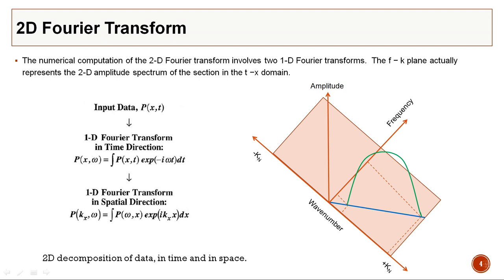A 1D Fourier transform of a seismic trace is one-dimensional in the time direction. If we want to do the 2D Fourier transform, it involves two 1D Fourier transforms: one in time and the other in space. In this diagram, if we consider just 1D Fourier transform we get amplitude vs. frequency. If we decompose this into dips, each linear event in the FK plane represents a dip, and extracting the amplitude spectrum for that particular dip gives you the 2D Fourier transform.